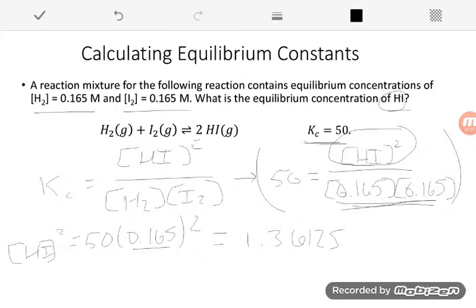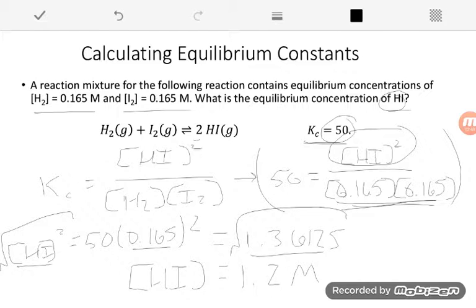I don't want to stop at HI squared equals 1.36125—I want just HI. So we take the square root of that, and I find that HI equals 1.2 M. I'm using two significant figures because I had two sig figs in the given data. And that's it.